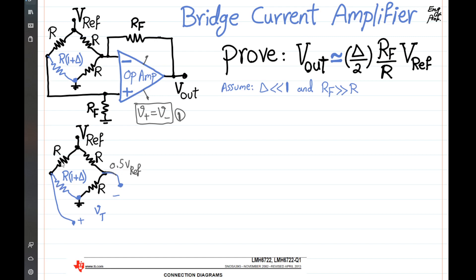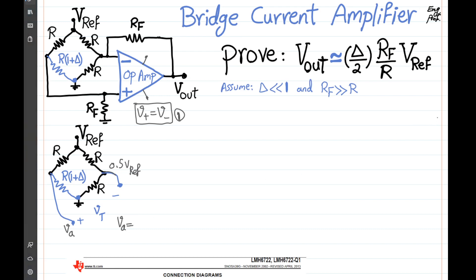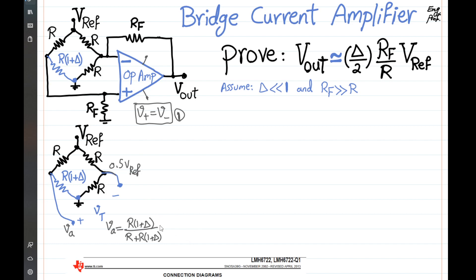On the other side, we have a voltage division between R and R·(1 + delta). The voltage VA is the voltage across R·(1 + delta) divided by the series combination R + R·(1 + delta), multiplied by V-ref. This gives (1 + delta)/(2 + delta) times V-ref.